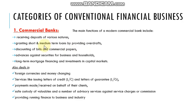Granting short and medium term loans by providing overdrafts is the asset side of the balance sheet of any commercial bank. They extend loans to those who are in need of funds. The third function is discounting of bills and commercial papers, and the fourth is advances against securities of businesses and households — again a form of lending.